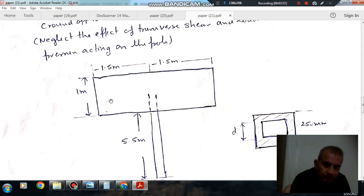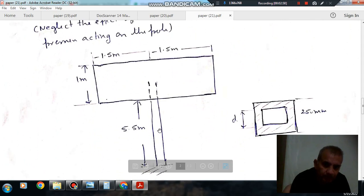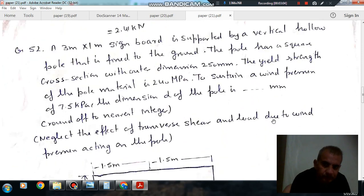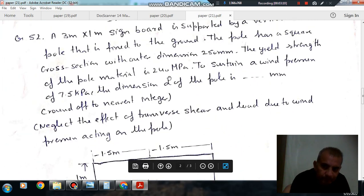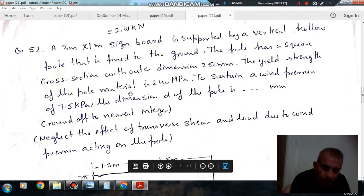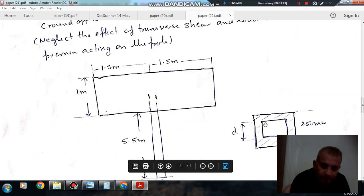So this is 1.5m, this is 1.5m, this is 5.5m. And this is your 250 mm and the cross section is square. And this is also, this is your dimension D. So we have to find out this dimension D.